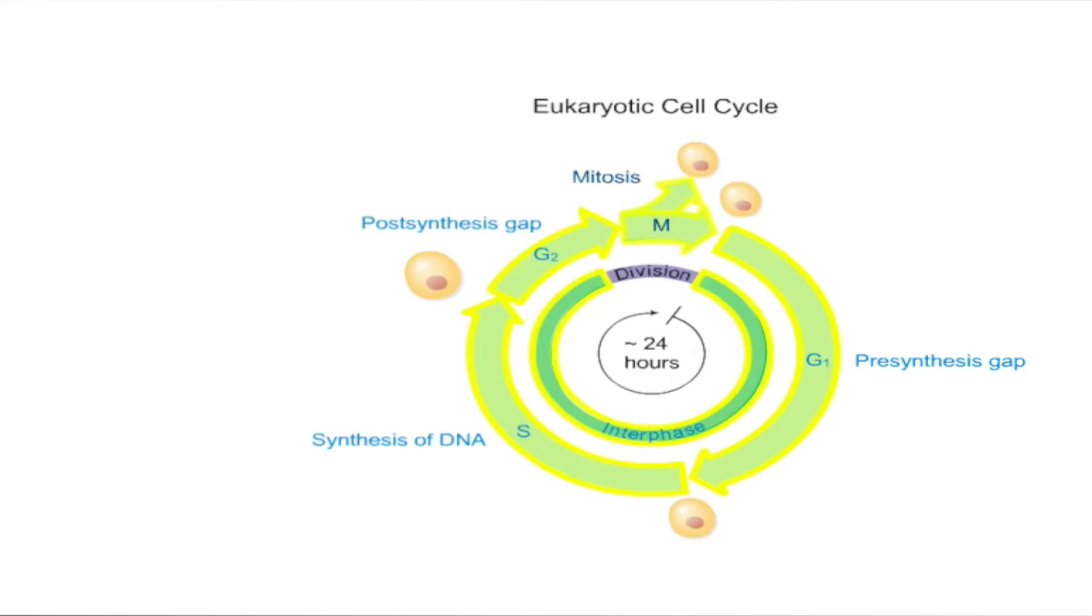After interphase, the M phase mitosis occurs during which the nucleus divides. Cytokinesis, division of the cytoplasm, usually follows mitosis. Both haploid and diploid cells can undergo mitosis.